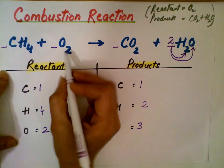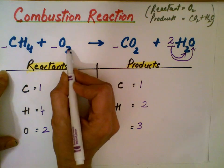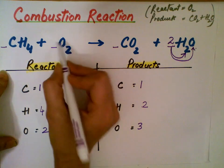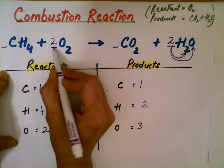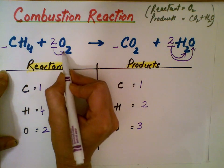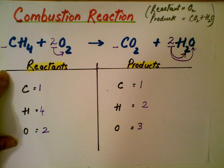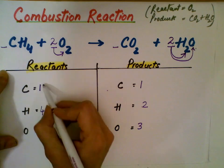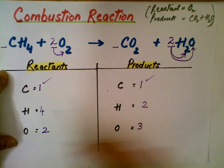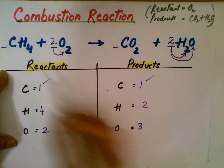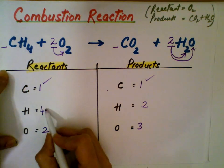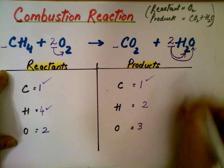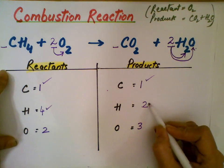How do I make the left-side oxygen 4? I'm going to put 2 in front of O2. That will make it 2 times 2, which is 4. Now it looks like everything is balanced: 1 carbon and 1 carbon, 4 hydrogen atoms here and 2 times 2 giving 4 here.